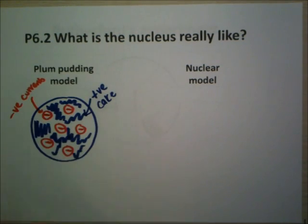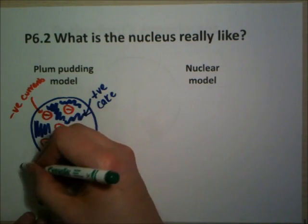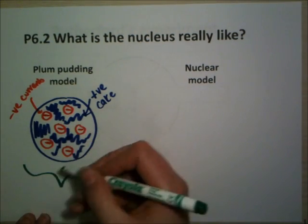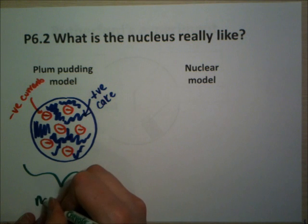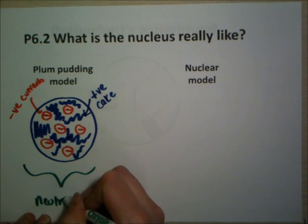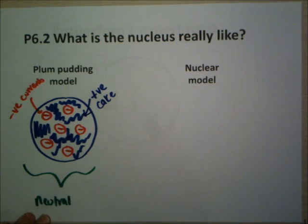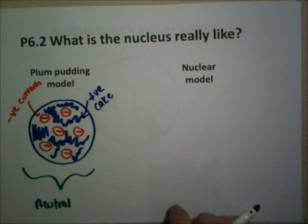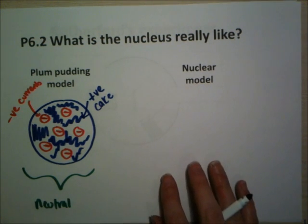There were lots of negative electrons in the plum pudding, and they knew that atoms were neutral, so there must be something positive there to balance out the negative. And he thought that the pudding, the cake bit of the plum pudding, was positive. So he had a positive cake with lots of negative currants in there, and overall that meant it was neutral. This is what they thought the atom looked like. We know now that that's not the case - we know that it's a nuclear model.